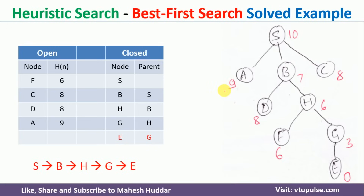This is a simple way of applying the best first search algorithm in artificial intelligence to find an optimal path from the source node to the goal node. In this video I have discussed the best first search algorithm as well as one numerical example. I hope the concept is clear. If you like the video, do like and share with your friends, press the subscribe button for more videos, and press the bell icon for regular updates. Thank you for watching.